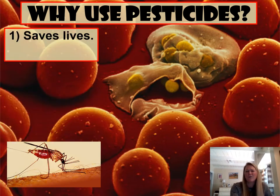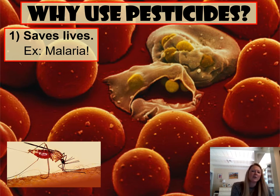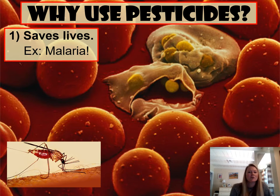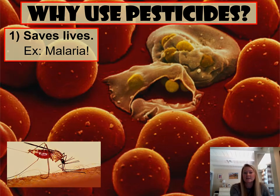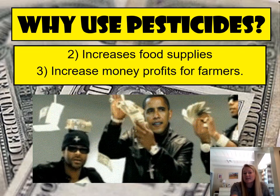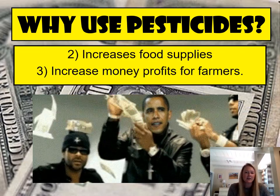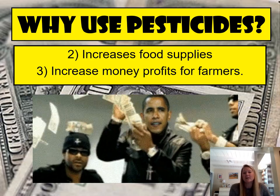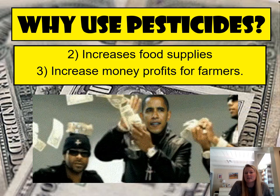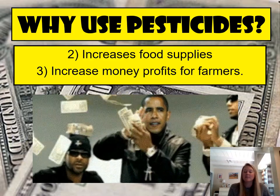So why should we use pesticides if we know these chemicals may be dangerous? The best argument is that it can save lives. When you spray pesticides and kill mosquitoes, for example, you just killed off the vector for malaria — and as we know, malaria can be quite deadly in places like Africa or tropical regions. Also, pesticides increase food supplies: if pests aren't eating our food, we can produce more food to feed the world. And it increases money profits for farmers — if they are able to sell more food, then they can make more money.